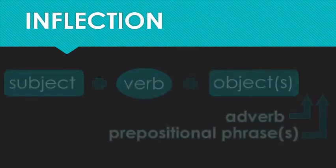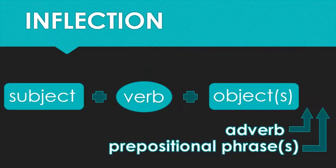So let's get down to the details now, starting with inflection. We're going to take a look at our traditional word order in English: subject, verb, one or more objects, adverb, and prepositional phrases. Last week we didn't deal with those two latter ones, but we've got adverbs now. So let's see how they all fit in.